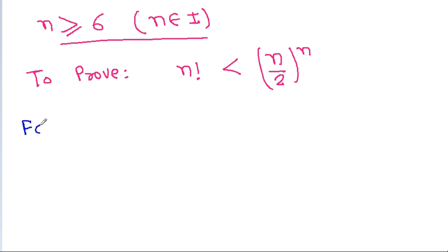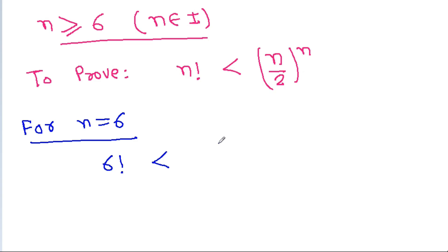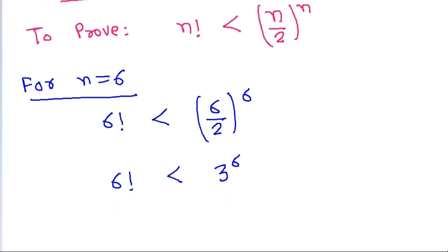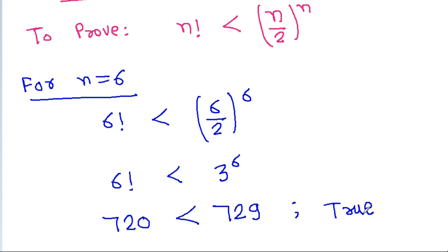For n equal to 6: 6! < (6/2)^6, which gives 6! < 3^6. We get 720 < 729. So it is true.